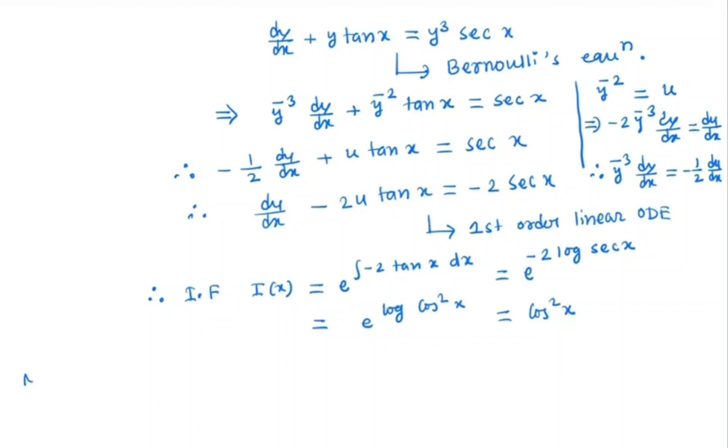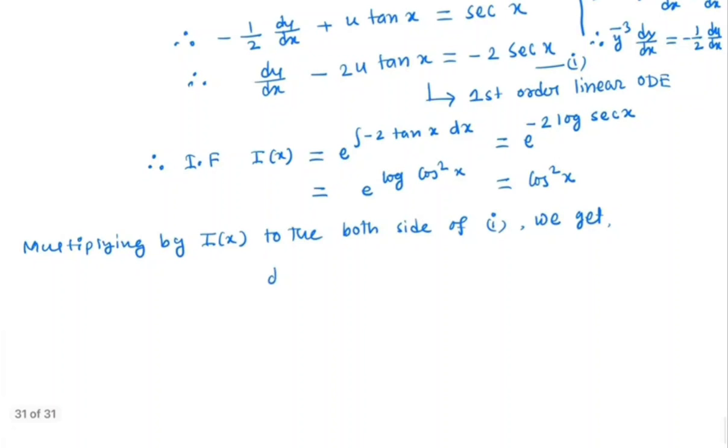So multiplying by integrating factor to both sides of the equation, we get d/dx of u cos^2 x equal to minus 2 sec x cos^2 x, which is minus 2 cos x.